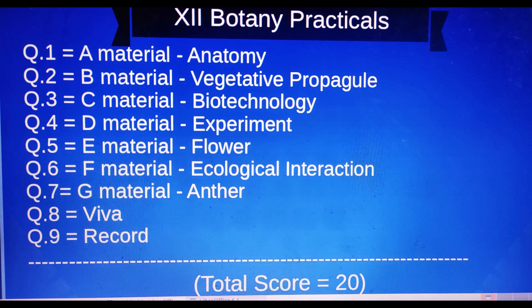Question number five: E material — flower and floral formulae. Question number six: F material — ecological interaction. Question number seven: G material — slide is available. Question number eight: experiment-based question where the examiner will show and ask. Question number nine: record — three marks. You have to certify the record for three marks.